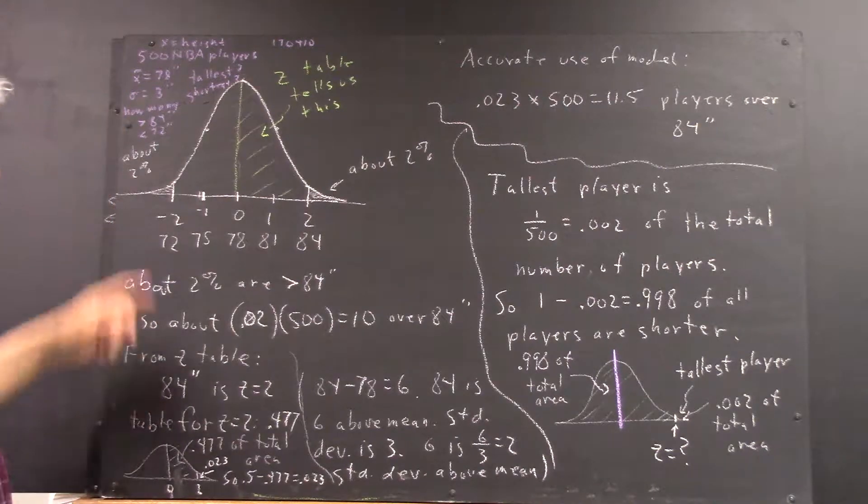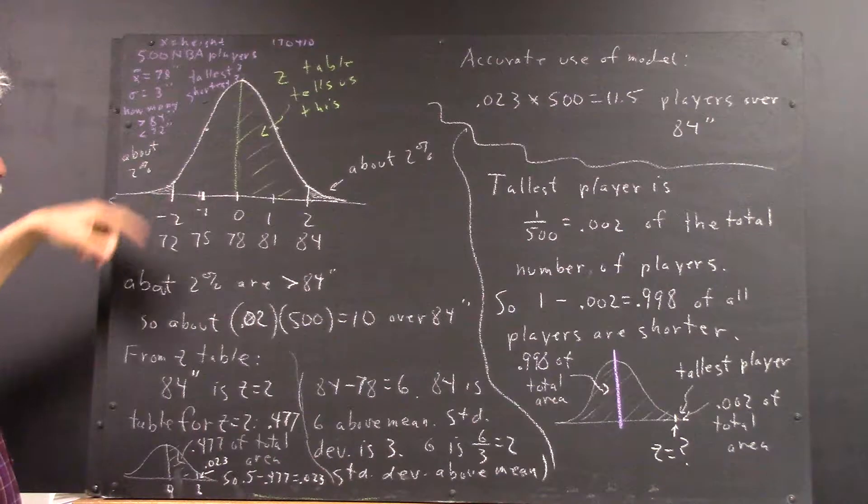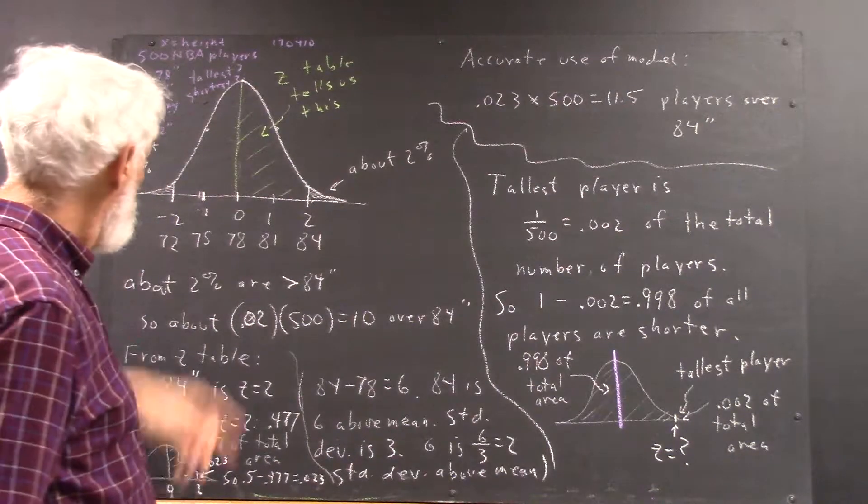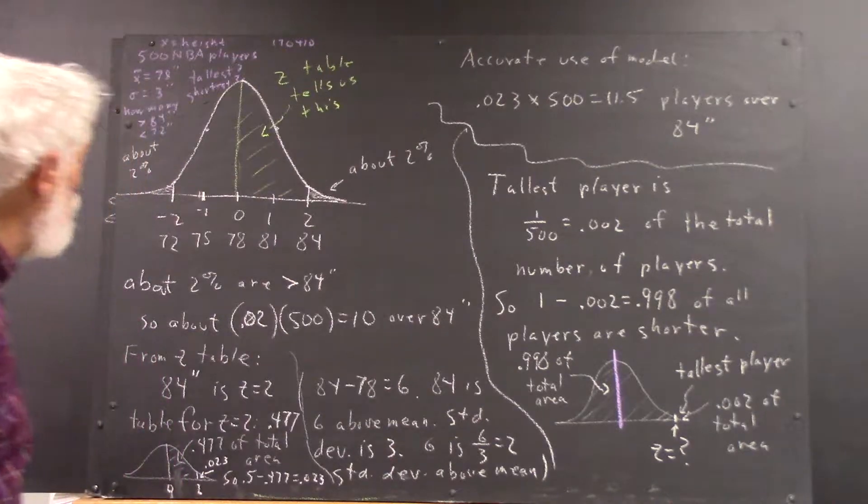We ask a couple of questions: how many are more than 84 inches high, how many less than 72 inches high, and how tall is the tallest, how tall is the shortest?